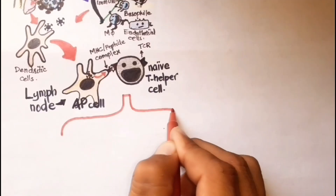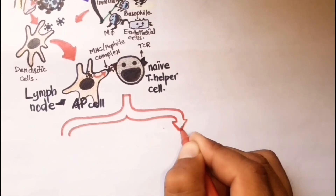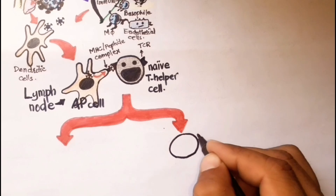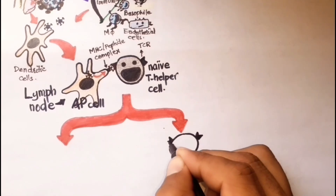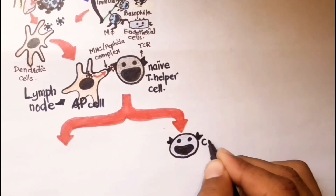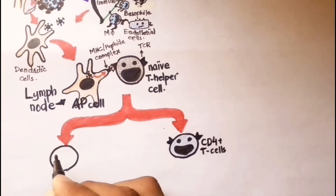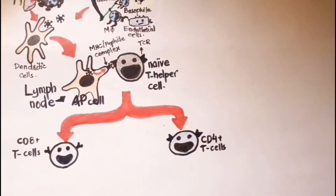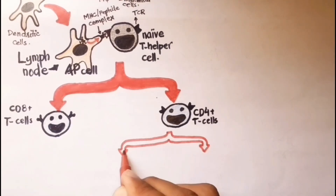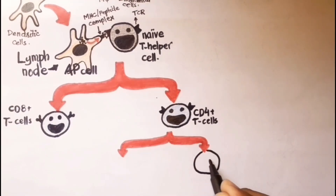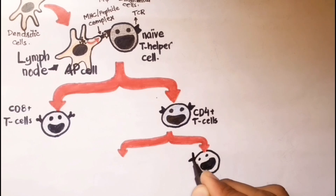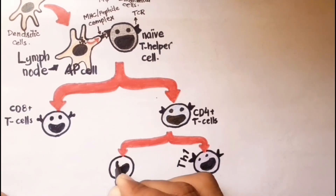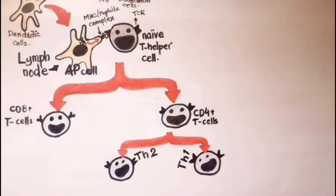Following activation of naive T helper cell receptors by the MHC peptide complex, T helper cells become activated, proliferate, and differentiate into CD4+ T helper lymphocytes and CD8+ cytotoxic T lymphocytes. CD4+ T helper lymphocytes further differentiate into T helper type 1 and T helper type 2 lymphocytes with different cytokine profiles.